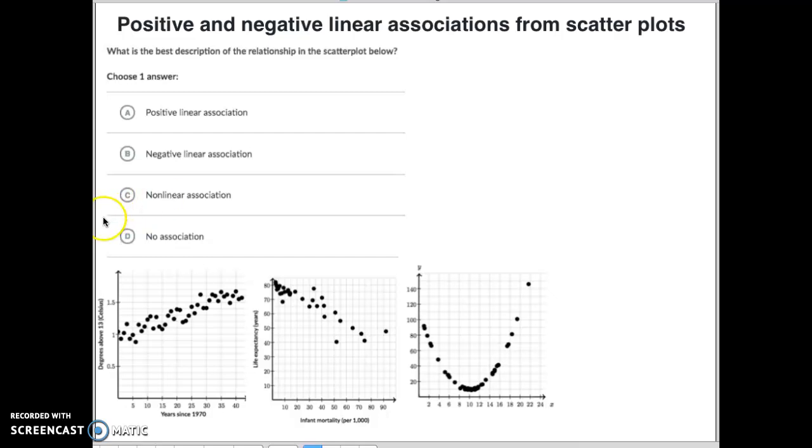And then finally, what in the world does a no-association look like? That means that you really can't make a positive, a negative, and it doesn't look like a curved line or anything like that. They're just dots scattered all over the place.